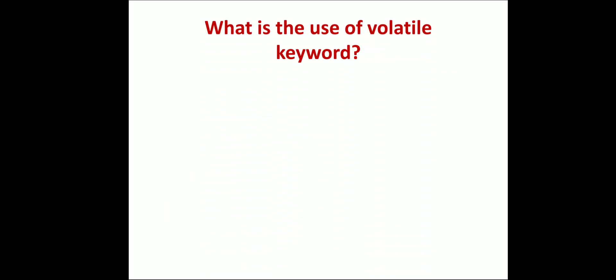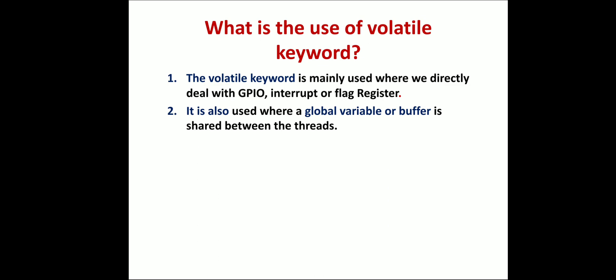What is the use of the volatile keyword and where can we use it? The volatile keyword is mainly used to deal with GPIO (general purpose input output), interrupt, and flag registers. It is also used where global variables or buffers are shared between threads.